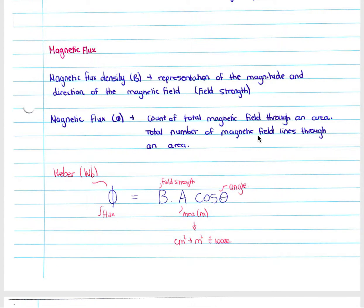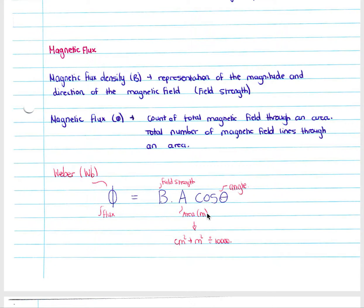Magnetic flux is the total number of magnetic field lines moving through an area. Measured in webers (Wb), it equals B — our magnetic flux density or field strength — times our area in meters squared. Remember your units: you must always use meters squared, times cos of the angle made between our magnetic field and our conductor.